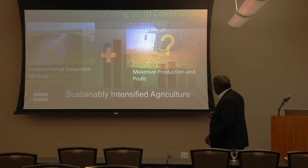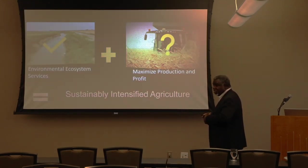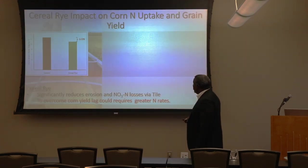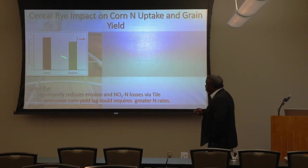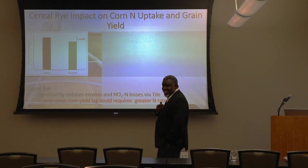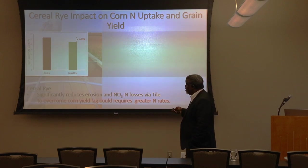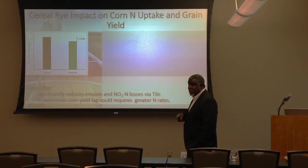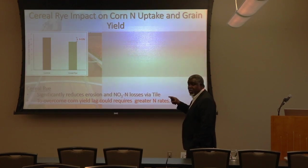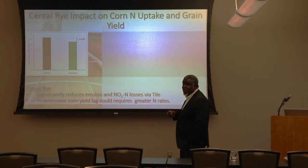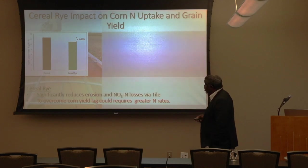Water quality check — we're doing a decent job there. But sustainably intensified agriculture has to include maximizing profit and production. Going back to cereal rye, when I look at my own studies and a meta-analysis of colleagues across the Midwest, we see about a 7% reduction in yield for corn following cereal rye. On average, you're looking at a yield reduction, though some farmers have figured out how to avoid it.